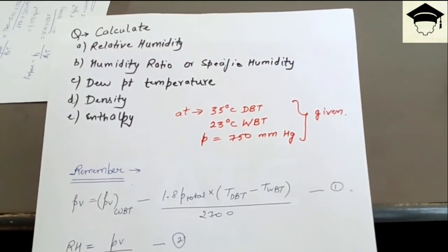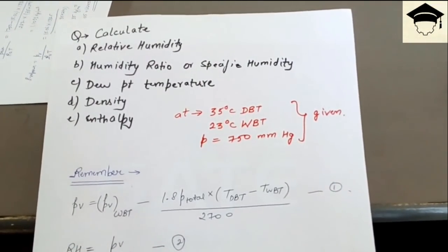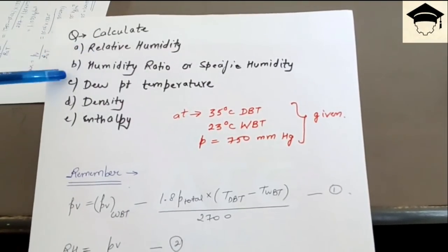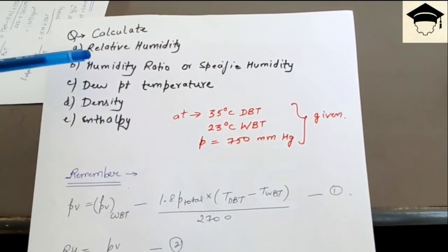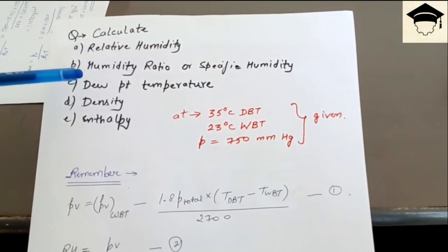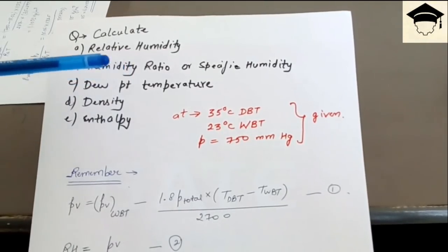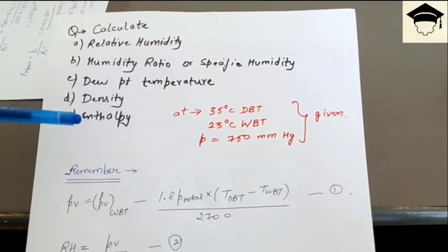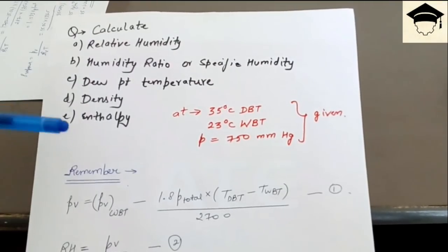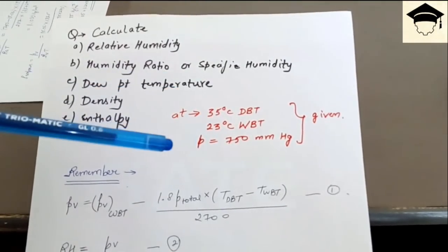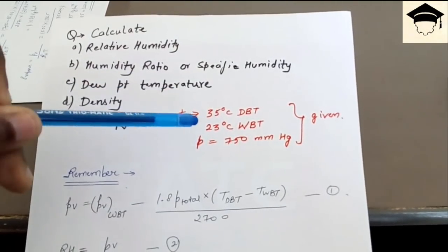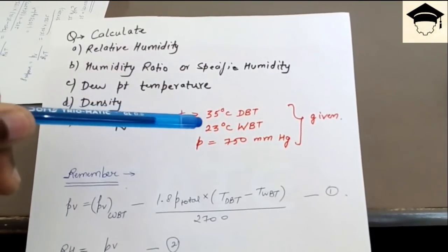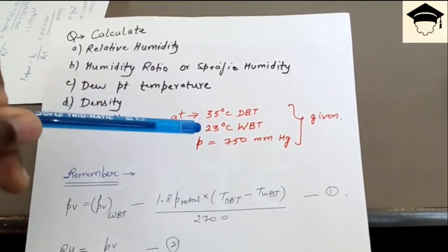The question requires us to calculate: relative humidity, humidity ratio (specific humidity), dew point temperature, density, and enthalpy. The given conditions are: dry bulb temperature (DBT) = 35°C, wet bulb temperature (WBT) = 23°C, and total pressure = 750 mmHg.